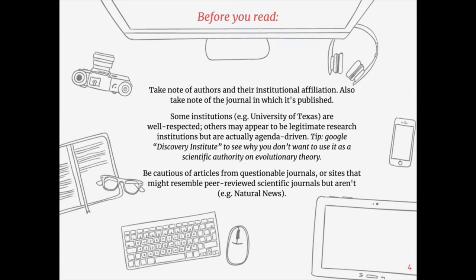Also take note of the journal in which the paper is published. Some institutions, like the University of Texas, are well respected, while others may appear to be legitimate research institutions but are actually agenda-driven. As a tip, Google the Discovery Institute to see why you don't want to use it as a scientific authority on evolutionary theory. Be cautious of articles from questionable journals or sites that might resemble peer-reviewed scientific journals but aren't.